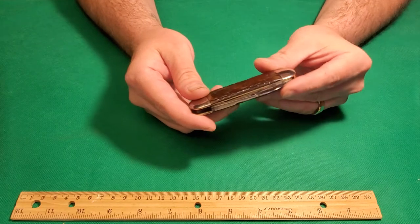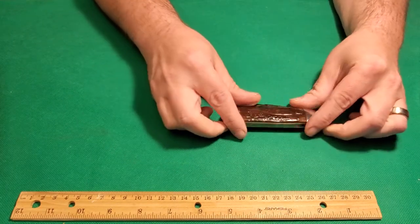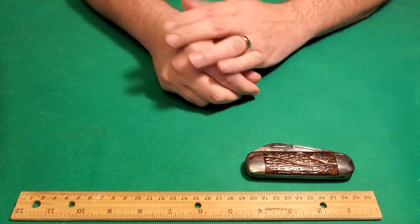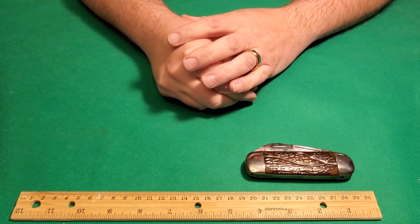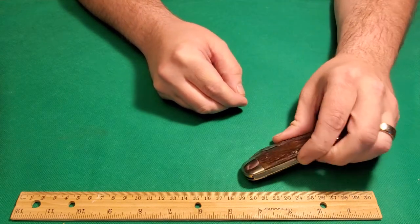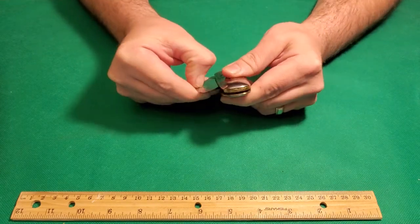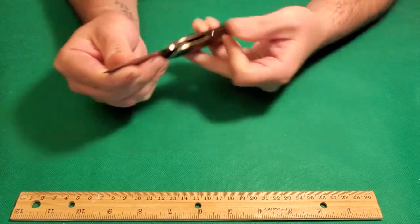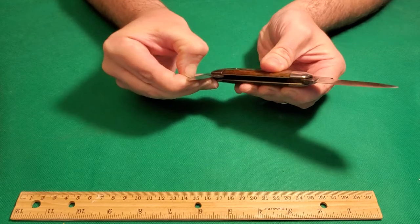First up, we have a super rare Case Bros knife from 1910-1915 era. They only used this stamp for a couple of years. This is one of the most desirable patterns, the Sunfish. This one's got great snap and great half stops.